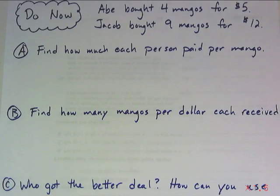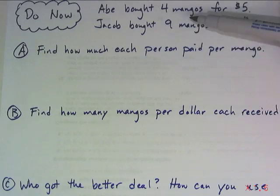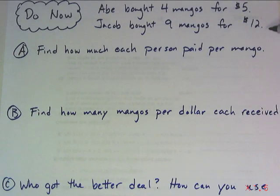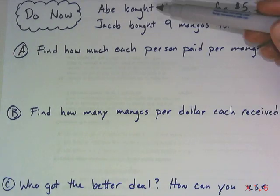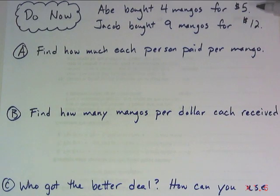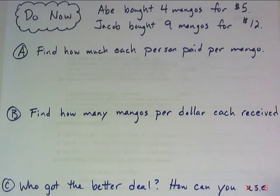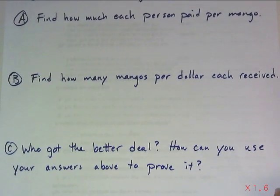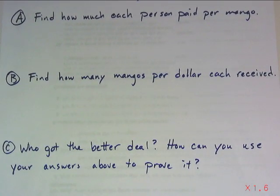For this do now, you need to start by writing down that we have two different guys who went and bought fruit from two different places. Abe bought 4 mangoes for $5. Jacob bought 9 mangoes for $12. And once you get that written down, you need to then answer these questions. Pause your video now.